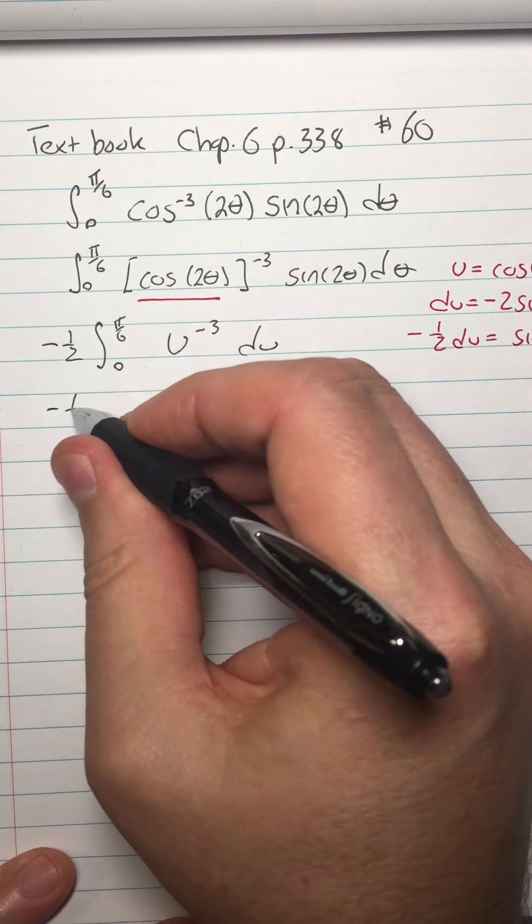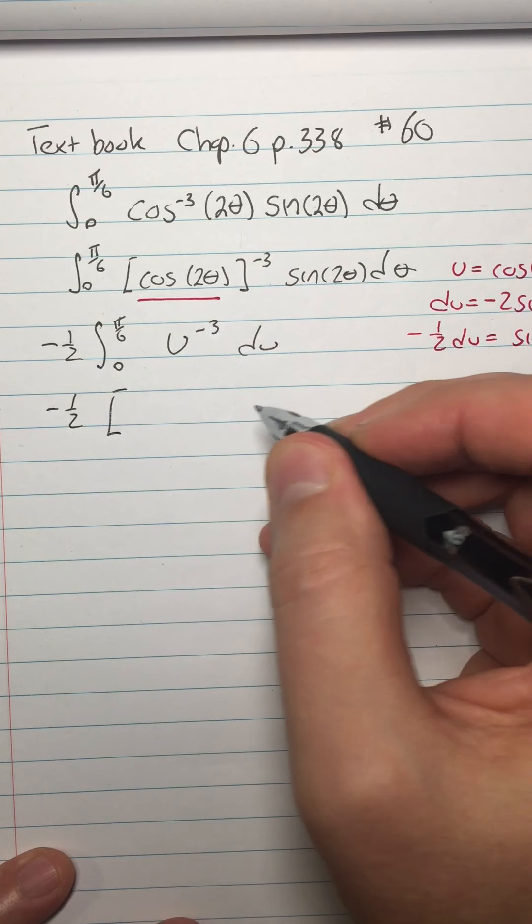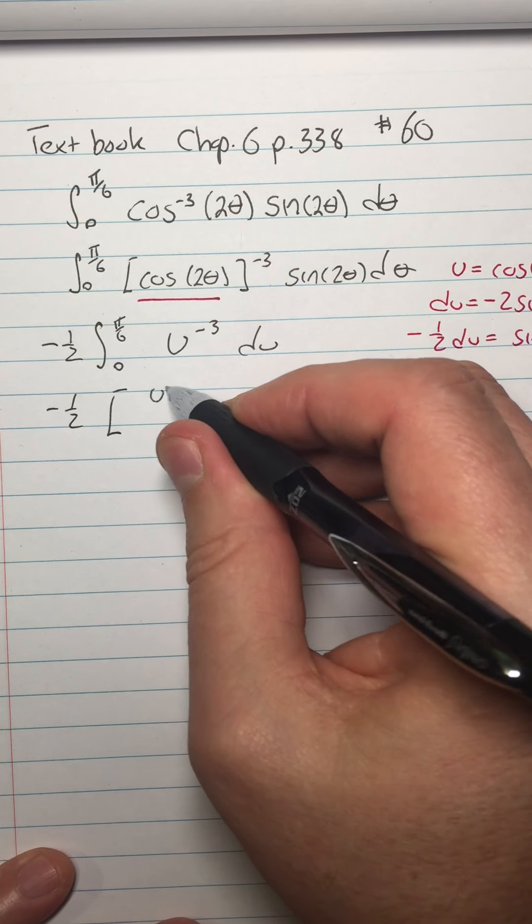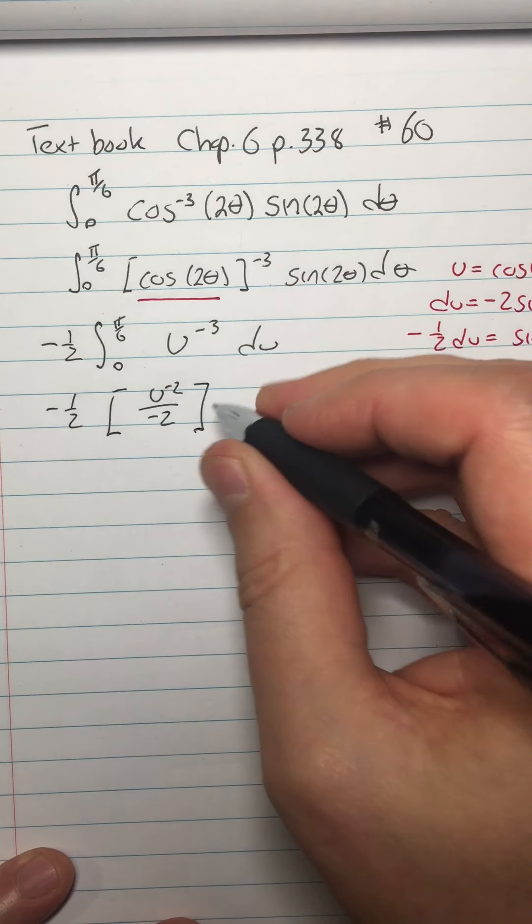All right, so now I have negative 1 half. I'm ready to do the antiderivative now. So I'm going to do u to the negative 2 over negative 2, raising the exponent 1, dividing by the new exponent.